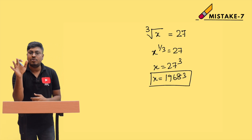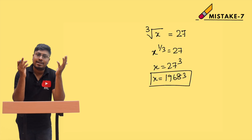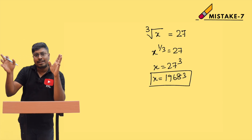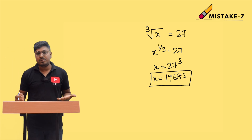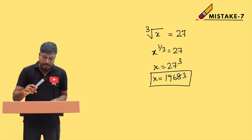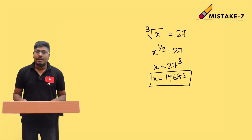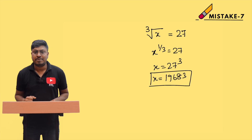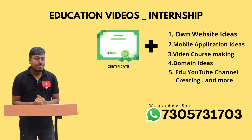Similarly, if it is a 4th root or any root, remove the root and write the power as 1/2, 1/3, or 1/4. Then bring that fraction to the right-hand side — it becomes squared, cubed, or to the 4th power — and multiply accordingly. This is the easy way to solve these questions without making mistakes. I hope after this video you won't repeat this mistake.